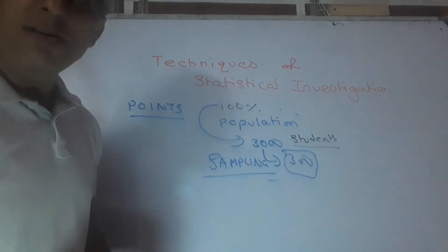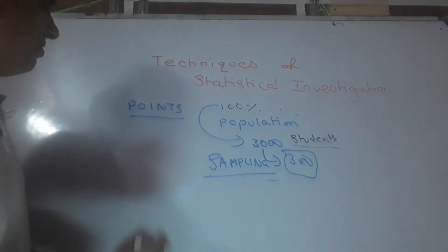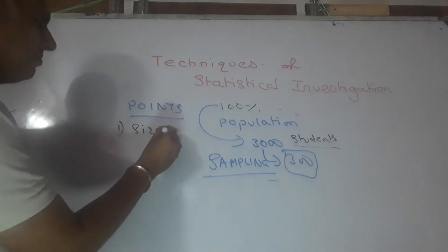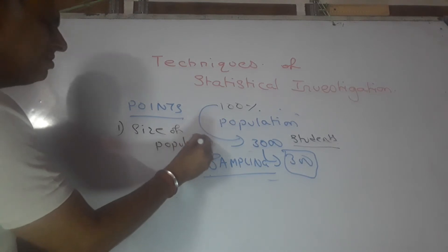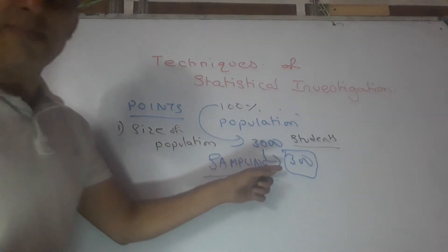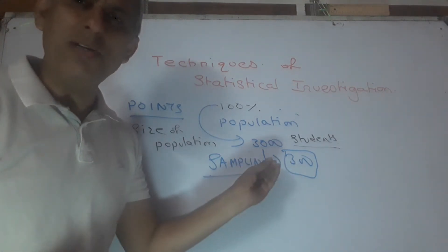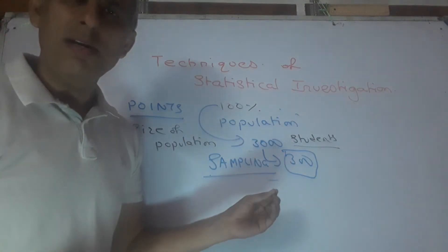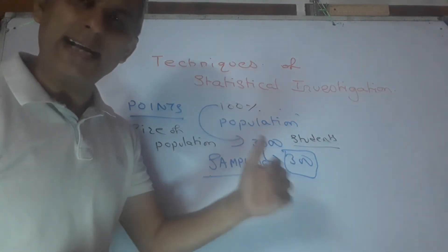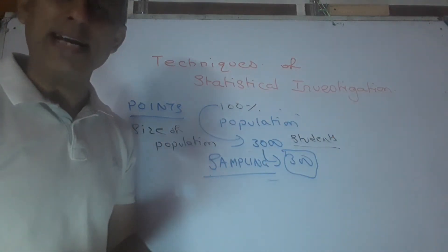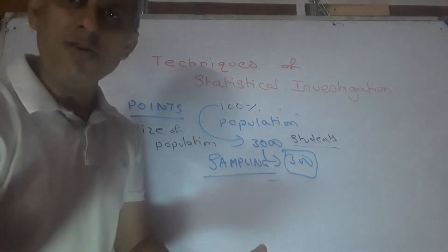Now what are the points you should keep in mind? First and foremost is the size of population. A school with 3000, a 300 sample might be good. But what about a school with 6000 strength? I think it might be too small for such a bigger school to take 300 sample. In that case, you have to increase the sample size. So what is the golden rule? The bigger the size of population, bigger should be the size of sample.